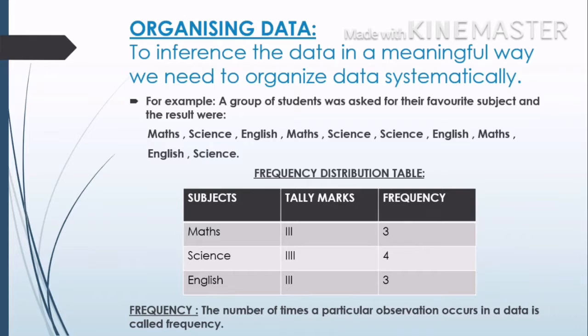Now to understand data in a meaningful way, we need to organize data systematically. For example, a group of students was asked for their favorite subjects and the results were as follows. To understand it, we need to construct a frequency distribution table so that we can easily locate how many students like mathematics, science, and English. You can easily say that the frequency of math is 3, science is 4, and English is 3.